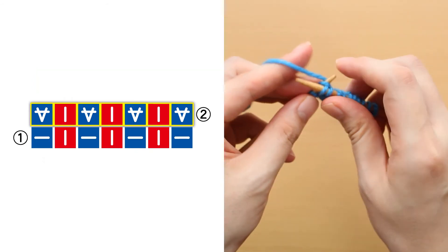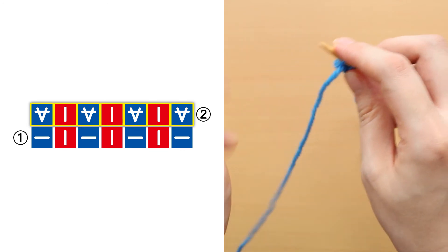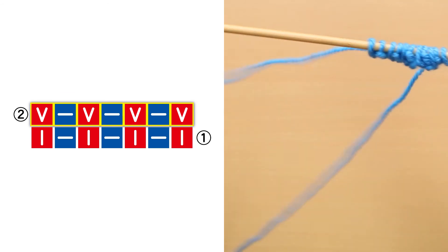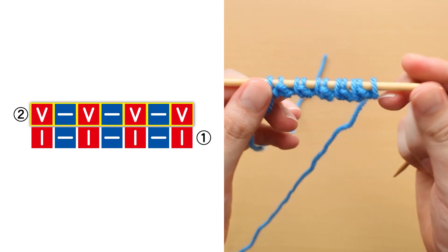In the case of 1 by 1 rib with 1 knit stitch on both ends, this operation is not necessary, so it is not necessary to go around double knitting, and 1 row knitting is sufficient.